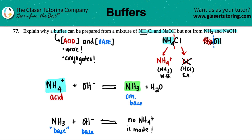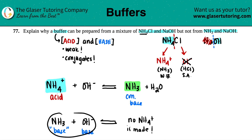Another key point: you always have to have one acid and one base on one side of the equation. You can never have two bases reacting with each other — that will never form a buffer. And you can't have two acids either — that would never be a buffer as well. So that's basically the end for this.